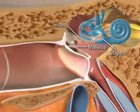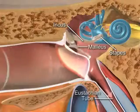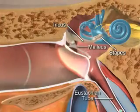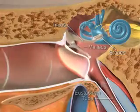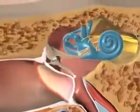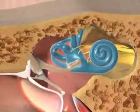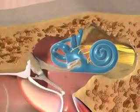The Eustachian tube of the middle ear opens into the pharynx and permits air pressure to equalize between the ear and the outside air. The inner ear is maze-like, consisting of bony and membranous structures surrounded by fluid.